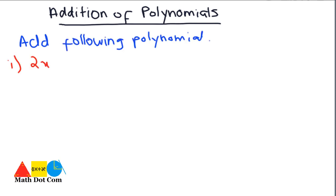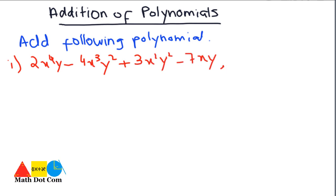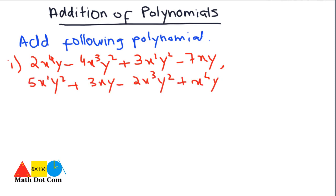The two polynomials are: the first is 2x⁴y − 4x³y² + 3x²y² − 7xy, and the second polynomial is given. These are polynomials because all the exponents of the variables are positive, and the operations are addition, subtraction, or multiplication.